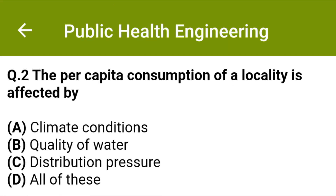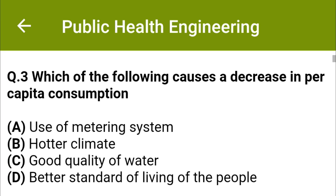The per capita consumption of the locality is affected by: option A: climate conditions, option B: quality of water, option C: distribution pressure, option D: all of these. The correct answer is option D: all of these.